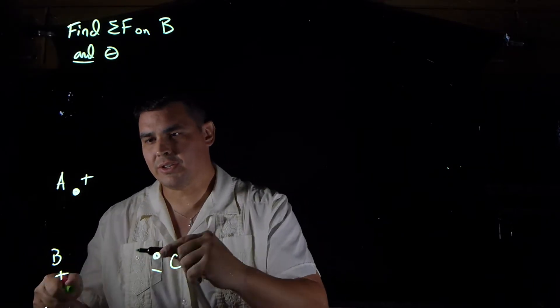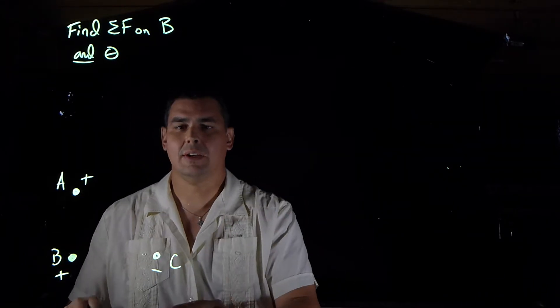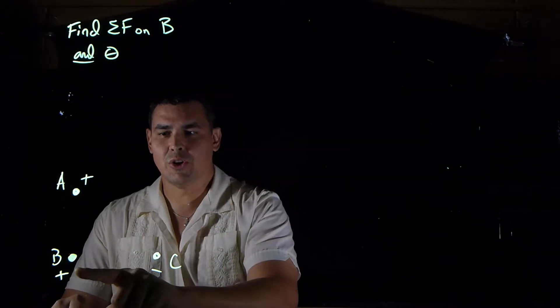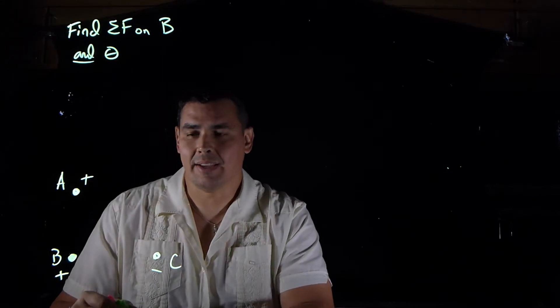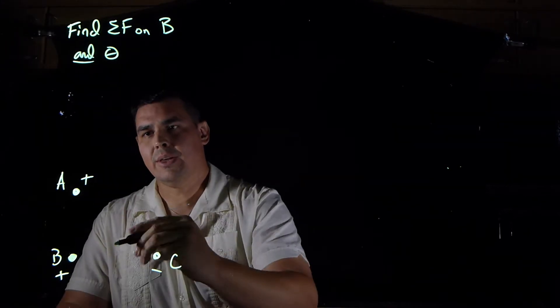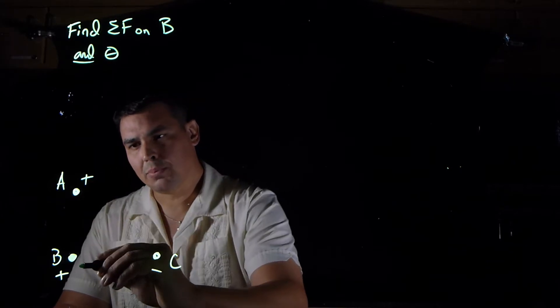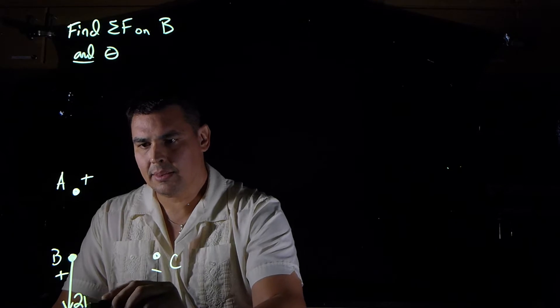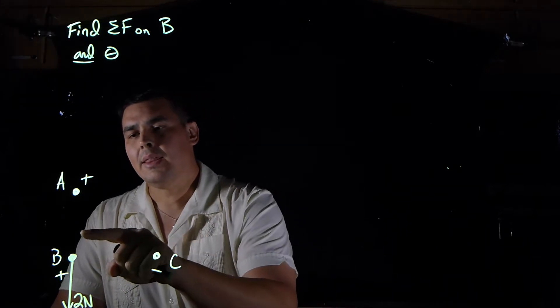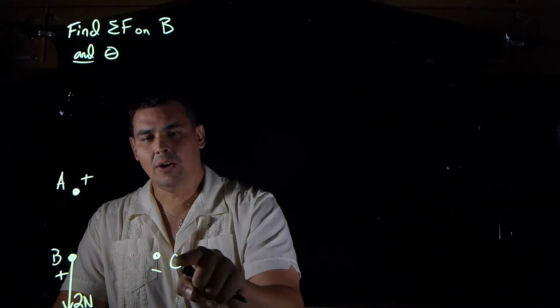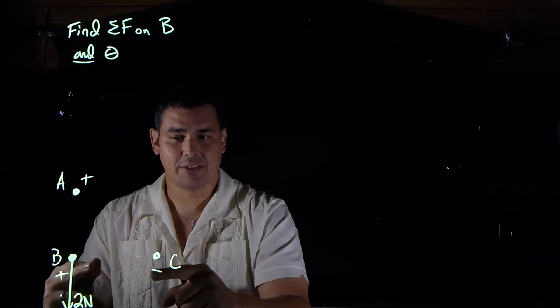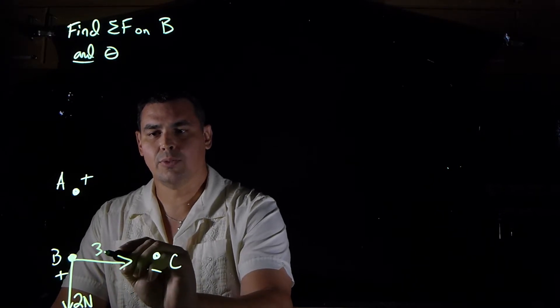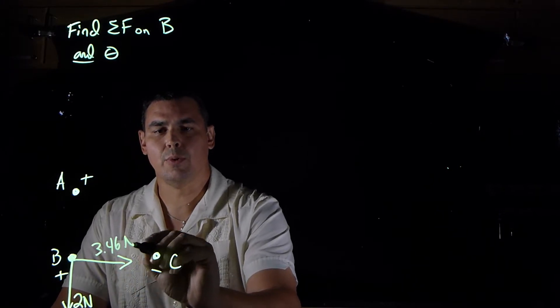Okay, so here's some charges. We have charge B, and what we want to do is find the magnitude of the net force acting on charge B and the angle that net force is acting at. So I know that A is a positive charge, B is a positive charge, so A is going to push B down, and I'm just going to say that's going to be a force of 2 newtons. And then I know that C and B are opposite charges, so they're going to attract, so C is going to attract B towards it, and I'm going to say that this force is 3.46 newtons.